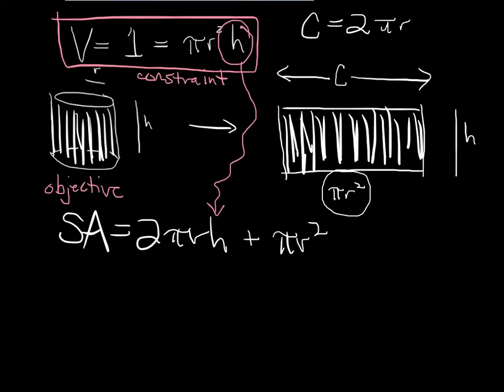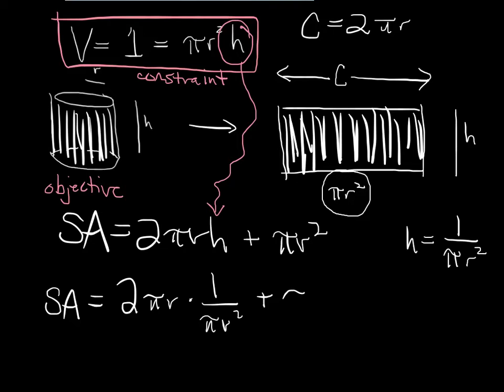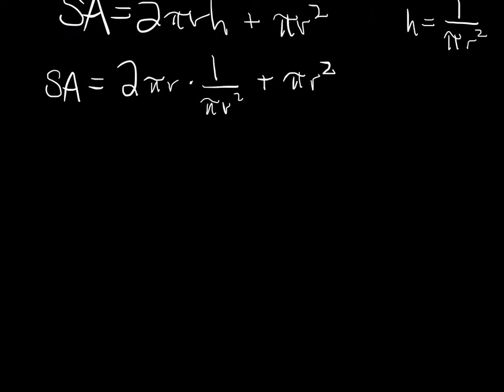h is 1 over πr². Let's put it in. We've got some canceling that happens, and we end up with 2 over r plus πr² for surface area.